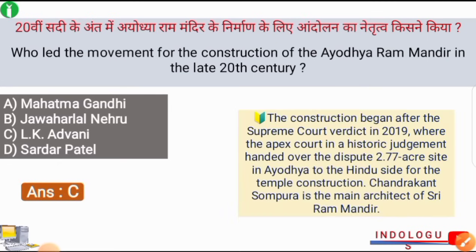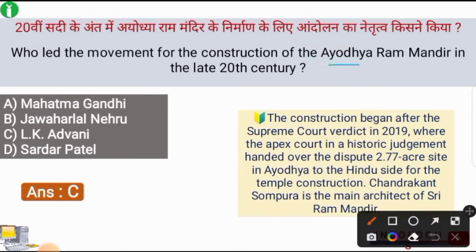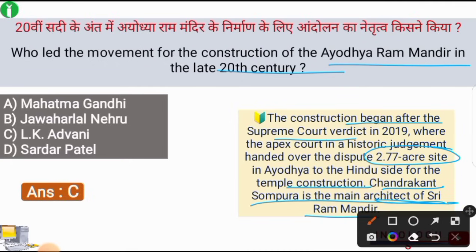The correct answer is option C, i.e. L.K. Advani, who led the movement for the construction of Ayodhya Ram Mandir in the late 20th century. The construction began after the Supreme Court verdict in 2019, where the apex court handed over the disputed 2.77-acre site in Ayodhya to the Hindu side for temple construction. Chandrakant Sompura is the main architect of Shri Ram Mandir. Muslims were awarded land of 5 acres.